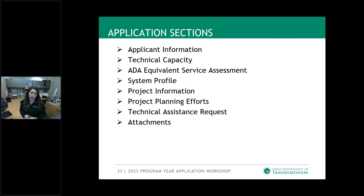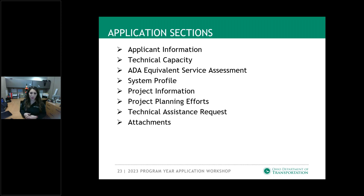Applicant information is very general. Technical capacity is only going to apply to rural transit providers — this is where we're asking about your financial capacity and things like that. Since urban transit systems receive funding directly from FTA and are overseen by FTA, we never dive too deep into that because FTA reviews them and knows whether they have the capacity to administer their funds. ADA equivalent service assessment is where we want to make sure you are providing service that meets ADA requirements. System profile is a rural transit section where we get more information about your fare structure and the type of service you provide.